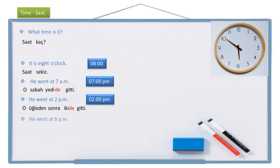If the sentence is he went at 8 p.m., then I understand he went in the evening. He — o, went — gitti, at 8 — sekizde, evening — akşam. He went at 8 p.m.: o akşam sekizde gitti.